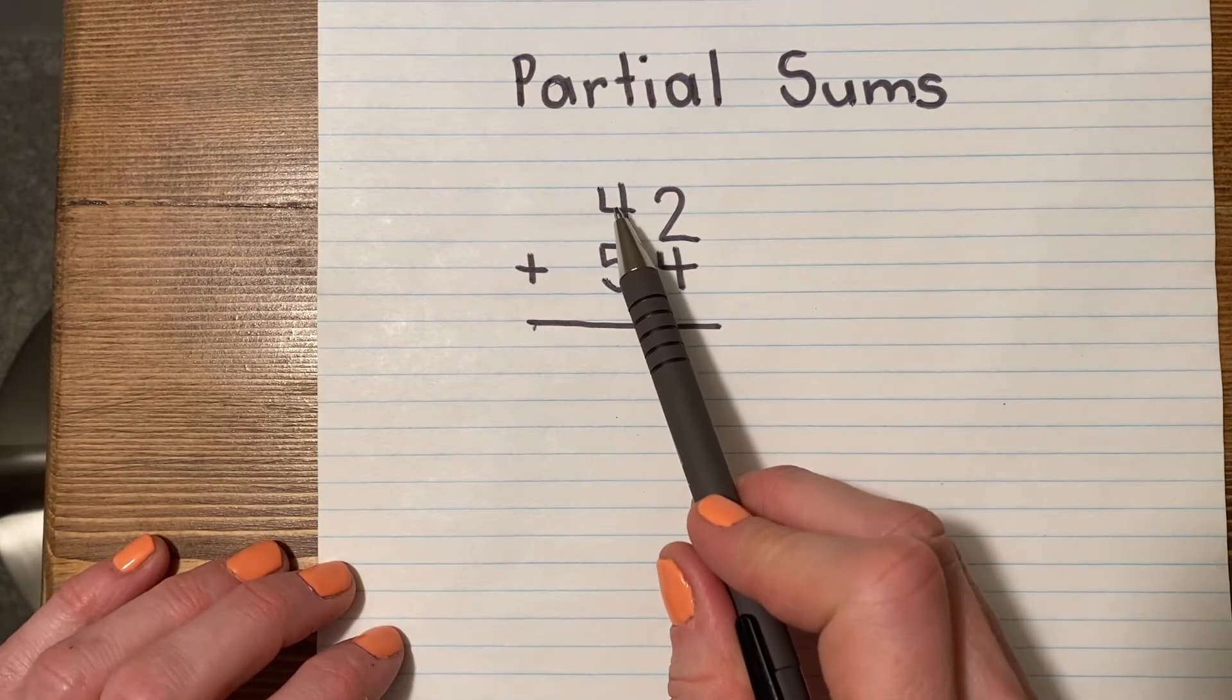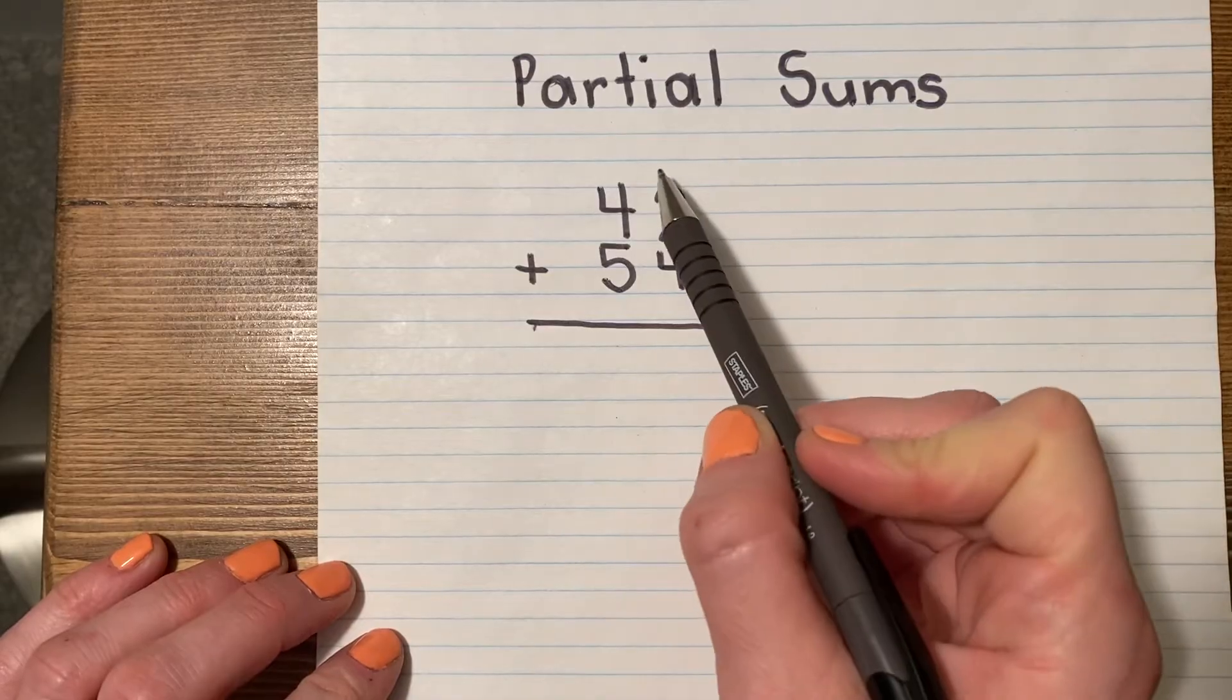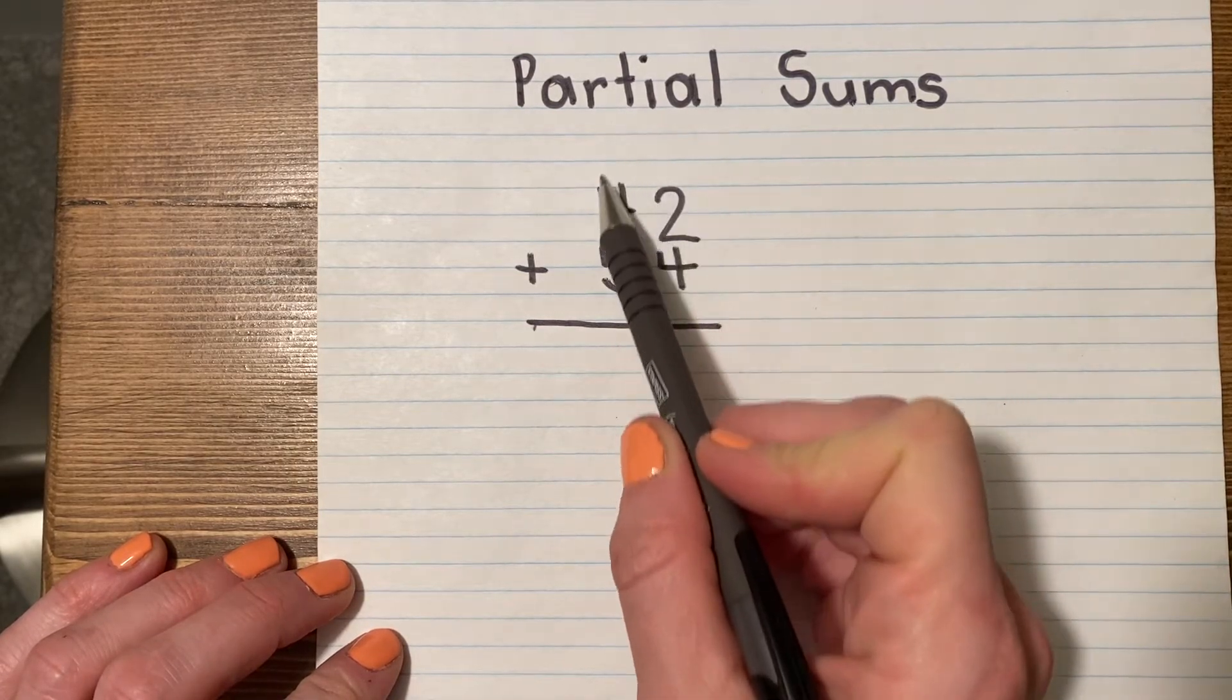You're going to start, for example, with 42 plus 54. And you'll notice that the stack has the ones in this column and the tens in this column.